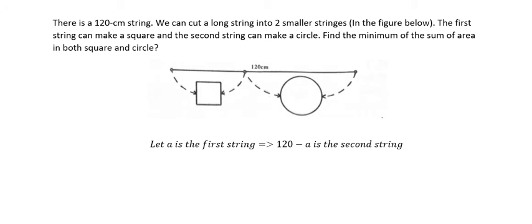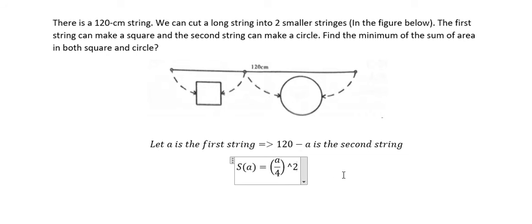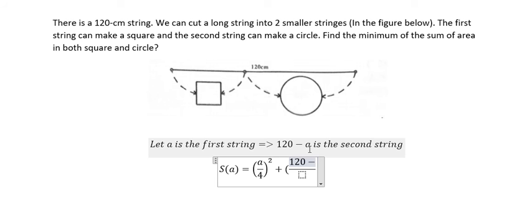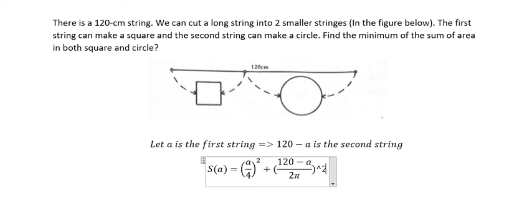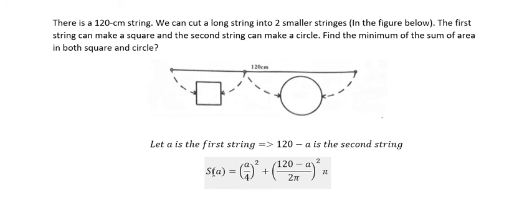Now we need to find the function of the area. We use S as the sum. Since a is the perimeter of the square, the side length is a divided by 4, and the area of the square is (a/4) squared. For the circle, 120 minus a is the perimeter, so the radius is (120 minus a) divided by 2π, and the area of the circle is π times the radius squared.